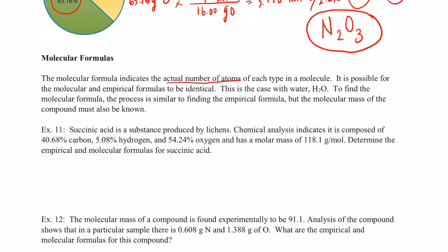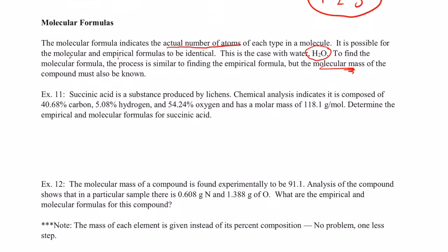Remember, it is possible for molecular and empirical formulas to be the same. That's true with water — water is two hydrogens to one oxygen, which is both the empirical formula and the actual formula. To find the molecular formula, the process is similar to finding the empirical formula, but there's one little extra step at the end: we need to know the molecular mass of the compound as well.